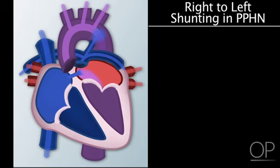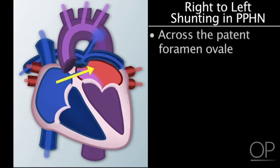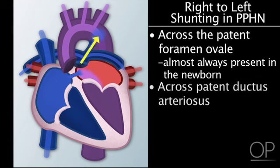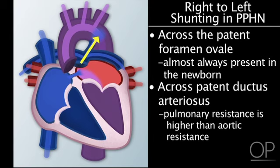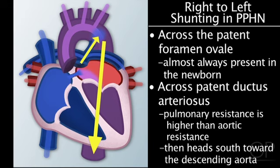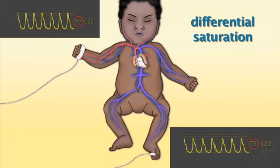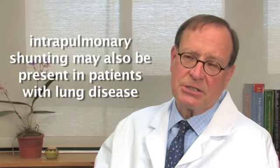This diagram shows the levels of right-to-left shunting in babies with PPHN. There can be right-to-left shunting across the patent foramen ovale, which is almost always present in a newborn. There can also be right-to-left shunting across the ductus arteriosus because pulmonary resistance is actually higher than aortic resistance. If the shunting is predominantly right-to-left across the ductus, this blood heads to the descending aorta, and there may be a differential in saturations — the right arm being considerably higher than the legs — characteristic of patients with PPHN. There's also intrapulmonary shunting if the patient has lung disease such as meconium aspiration syndrome.